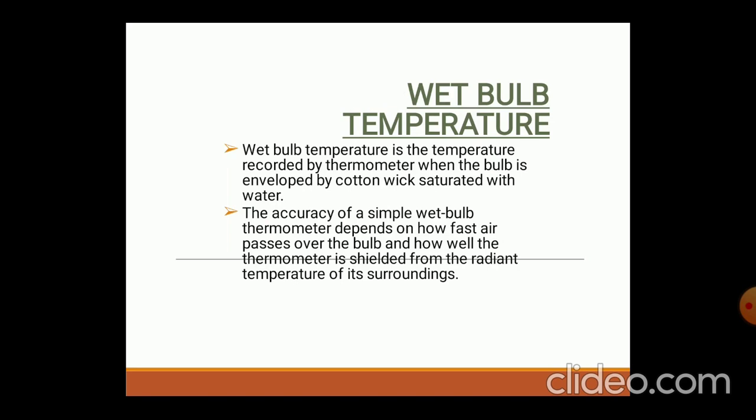What do we mean by wet bulb temperature? Wet bulb temperature is the temperature recorded by a thermometer when the bulb is enveloped by a cotton wick saturated with water. To take the wet bulb temperature, we have to cover the thermometer with a wetted cloth — it should be totally saturated with water. The accuracy of wet bulb temperature depends upon how fast air passes over the bulb and how well the thermometer is shielded from the radiant temperature of the surroundings.